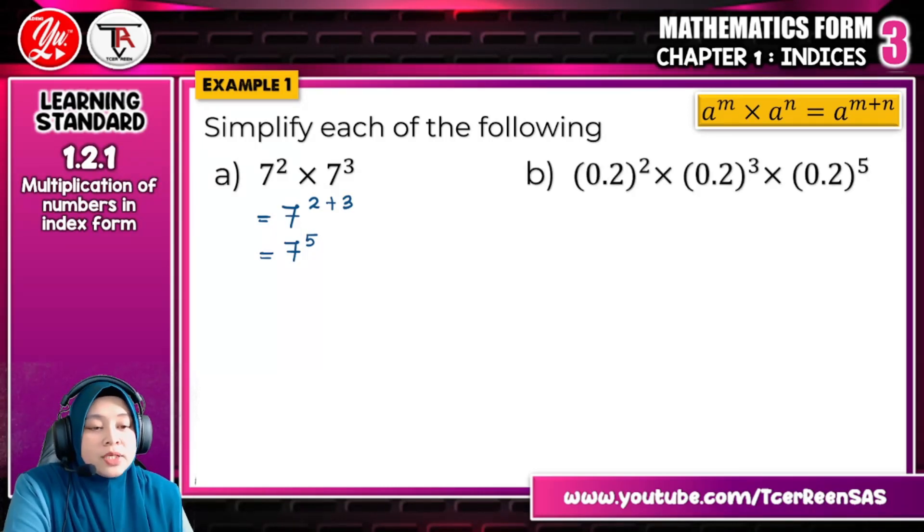Let us move on to question B. As I said before, if the base is the same, you can see here 0.2, 0.2 and 0.2 is the same base, but the index is not the same. So the final answer should be 0.2 and the indices is 2, what you should do to the 3. You need to add because the operation here is multiply. 2 plus 3 plus 5, so the final answer is 0.2 to the power of 10.